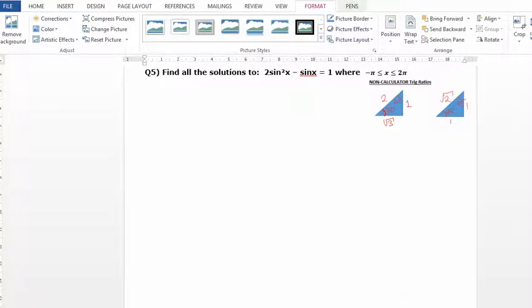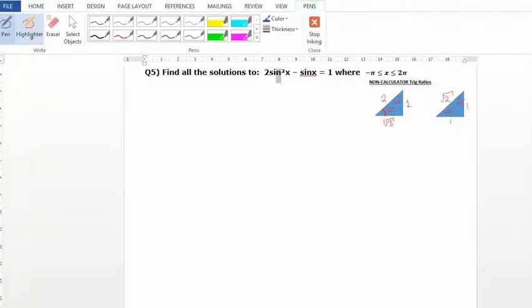This is a quadratic trig equation because you've got sine squared x. Sine squared x is shorthand for sine x all squared, i.e. sine x times sine x, don't forget that.